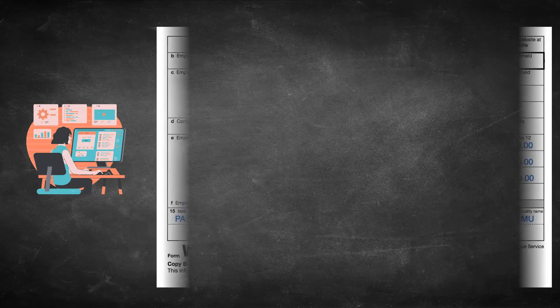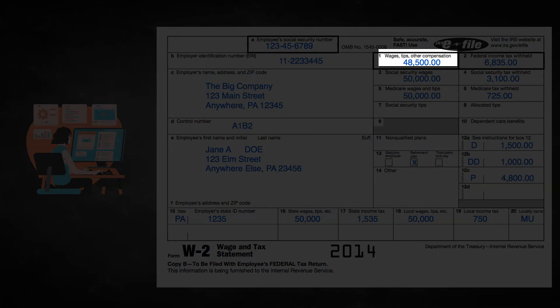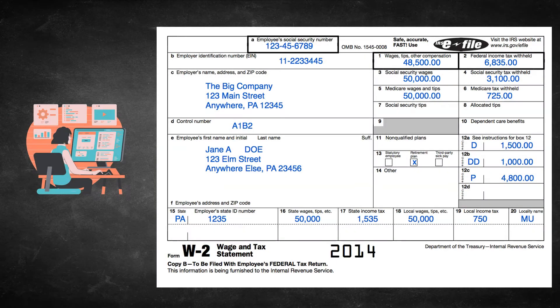Before I talk about 1099 forms, let's discuss about something we all are aware of. If you are an employee of a company, I am sure you would have received a W-2 showing you how much money your company paid you as salary. Your company also submits the same information to IRS so that the government can track if you are paying taxes properly.